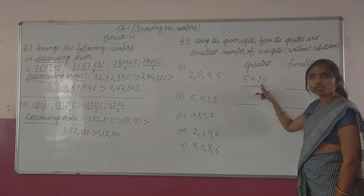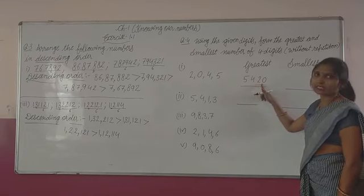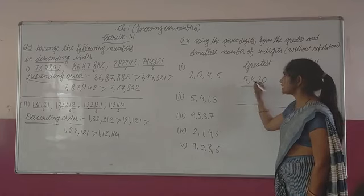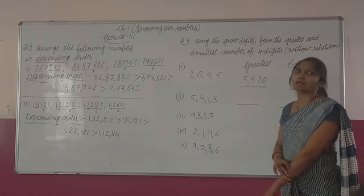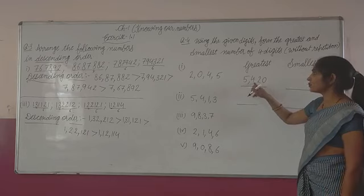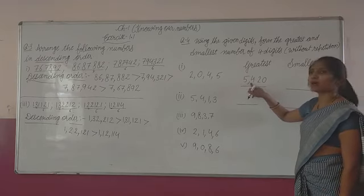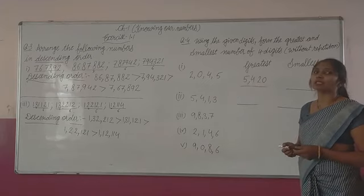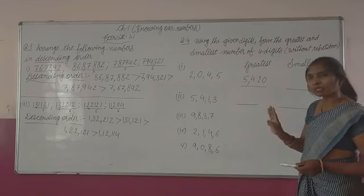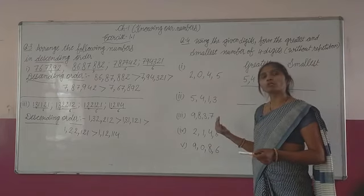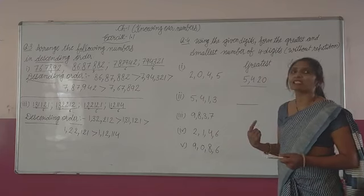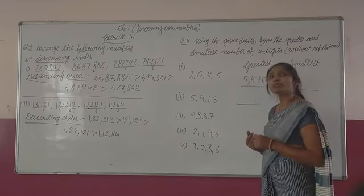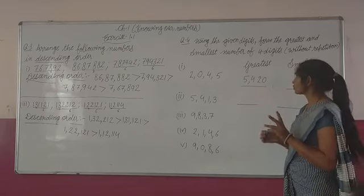In the number, don't put commas after each digit. Commas are placed only after each period. In Indian place value, the first comma comes after three digits — that is the ones period. After that, other commas come after every two digits, because the ones period has three places and all other periods have two places each. Clear?